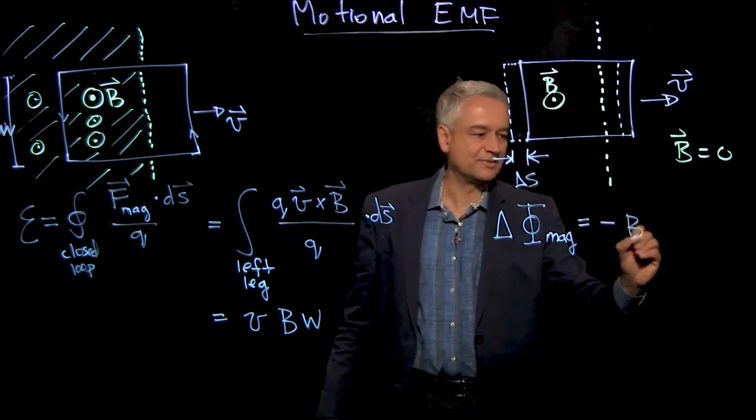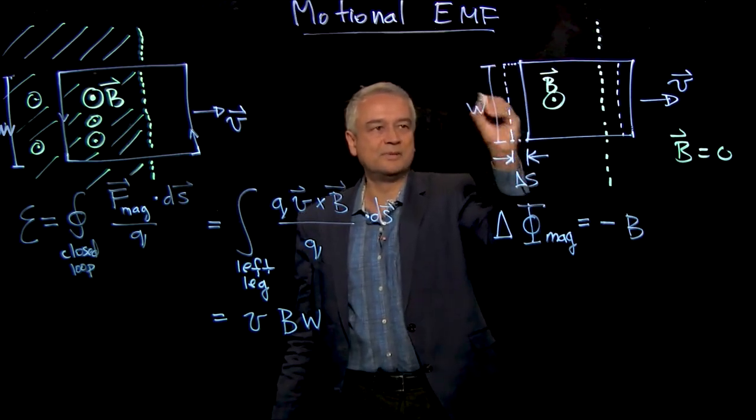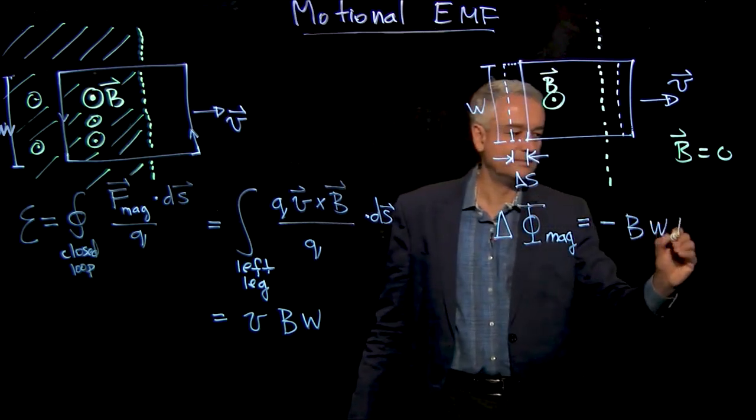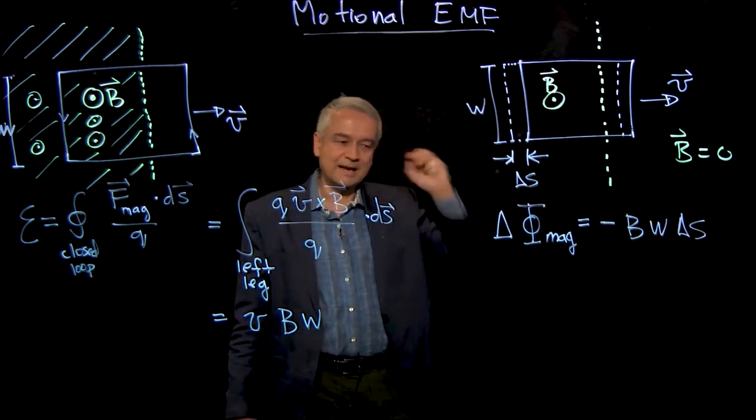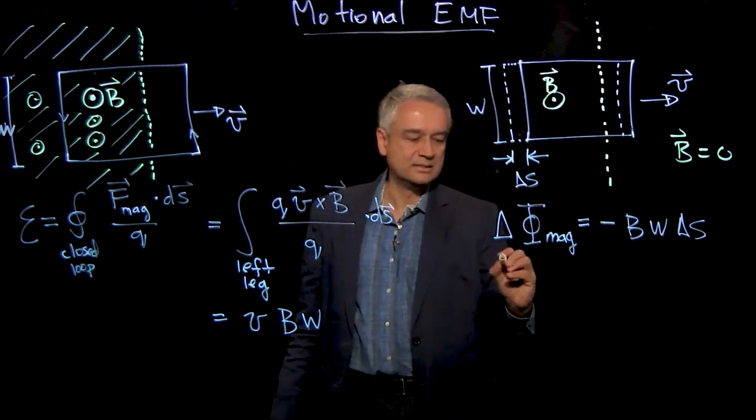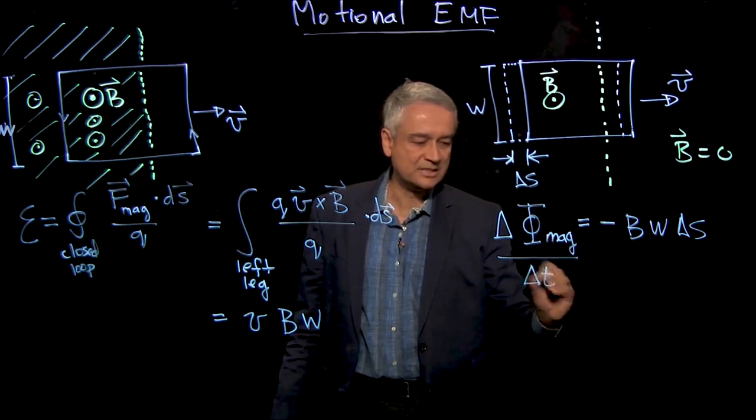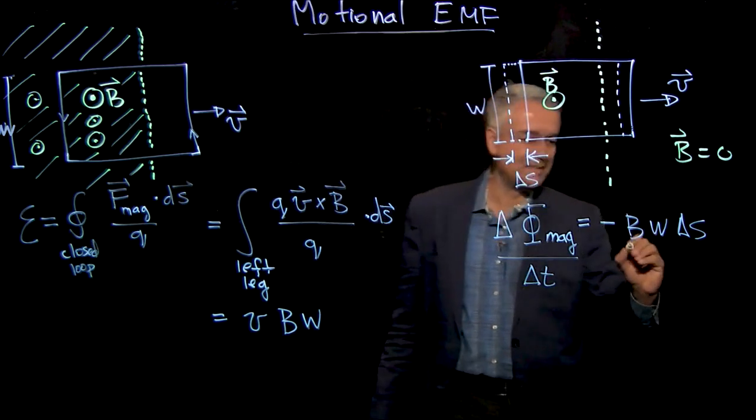And how much has it changed? Well, it's changed by this area here times B. B is the strength of the magnetic field, and what's this area? Well, this area is this width W that we had before times Delta S. And if I now ask what is the change, the magnetic flux divided by Delta T - remember this is how much the loop has moved in a time Delta T - then I better divide by Delta T over here.